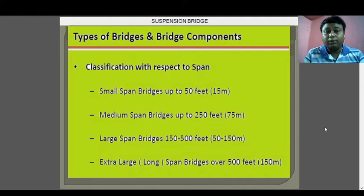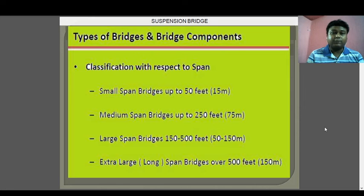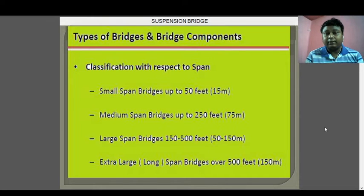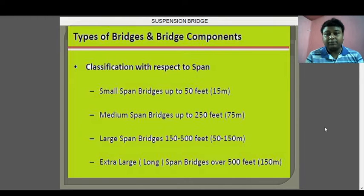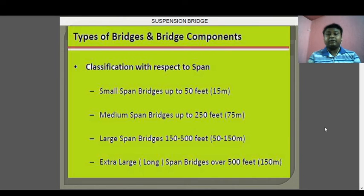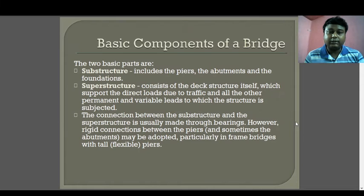Classification with respect to span: small span bridges up to 15 meters, medium span bridges up to 75 meters, large span bridges from 50 to 150 meters, and extra large bridges above 150 meters.